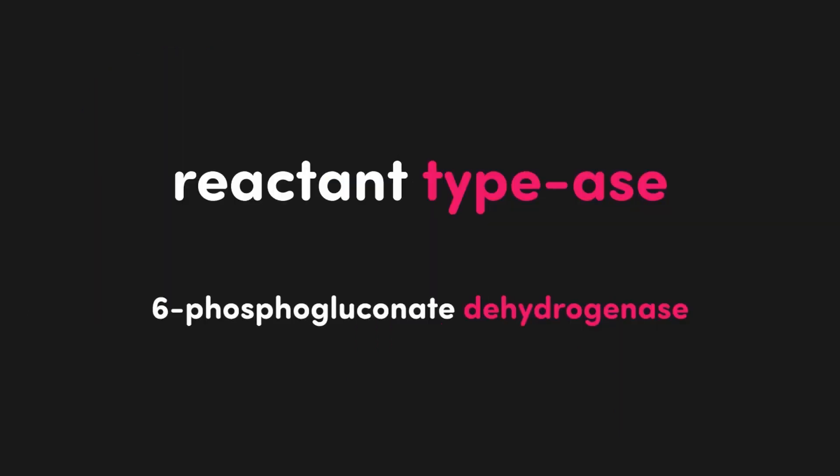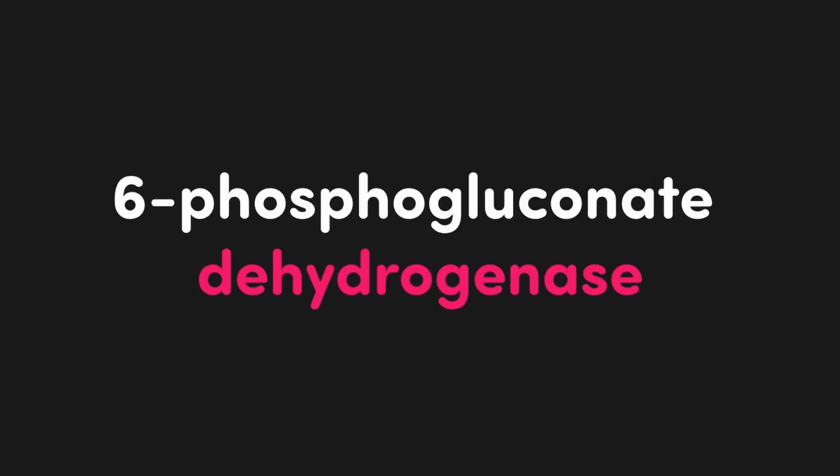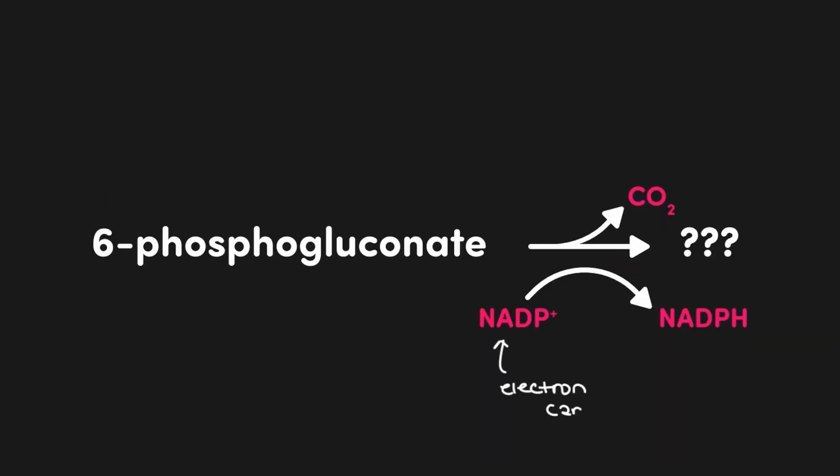If we look at a lot of our enzyme names, they're going to first list the reactant and then a particular type of enzyme. For example, for the enzyme 6-phosphogluconate dehydrogenase, its reactant would be 6-phosphogluconate. Since it's a dehydrogenase enzyme, it will always involve electron carriers, and sometimes it will also involve the release of CO2. By understanding this naming, we know a part of the pentose phosphate pathway without even having studied it, and we can make pretty good guesses as to what other enzymes would do.